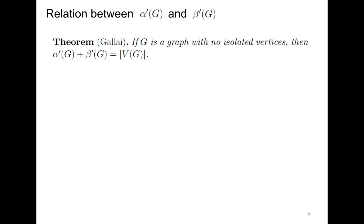So α'(G) + β'(G) = n. Now we will quickly see its proof. To prove it, on one side, we will start with a matching and from the matching form an edge cover. On the other side, we will start with an edge cover and form a matching.